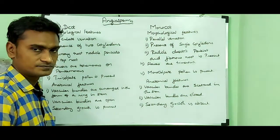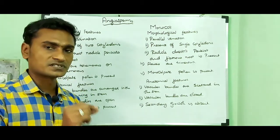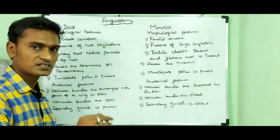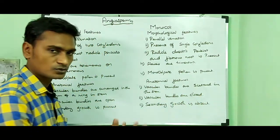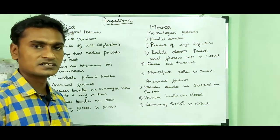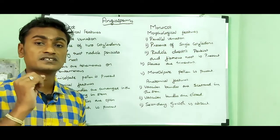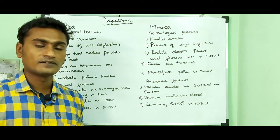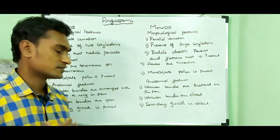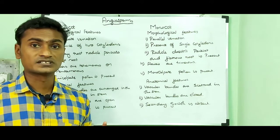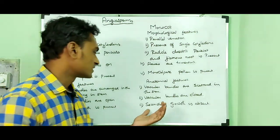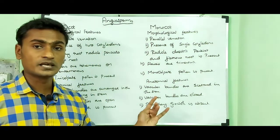In dicots, vascular bundles are open — meaning cambium is present. In monocots, vascular bundles are closed — cambium is absent. Due to the presence of cambium, secondary growth is present in dicots. Cambium is a meristematic cell and a lateral meristem; it divides continuously, giving secondary growth to the plant and increasing its girth. In monocots, secondary growth is absent because cambium is absent.